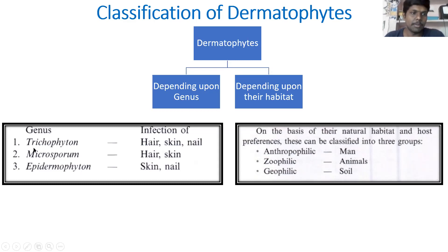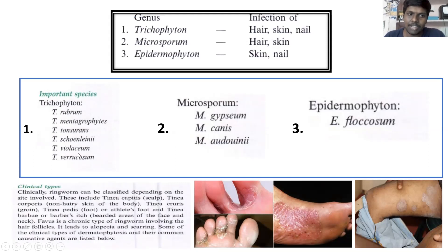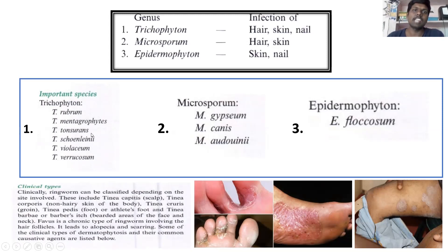Let us discuss Trichophyton species first. Important species in Trichophyton include T. rubrum, T. mentagrophytes, T. tonsurans, T. schoenleinii, T. violaceum, and T. verrucosum — six clinically important species that will cause infections in humans. In Microsporum we have three types: M. gypseum, M. canis, and M. audouinii. In Epidermophyton we have only one species: E. floccosum.